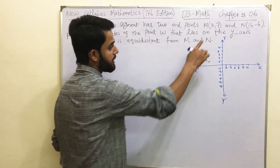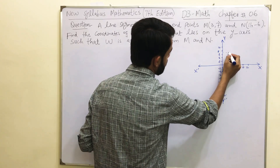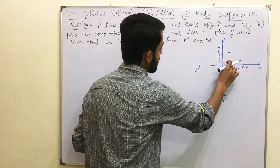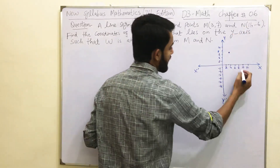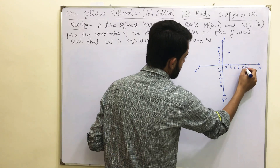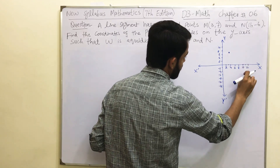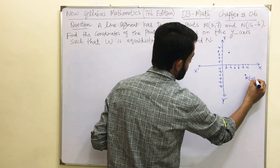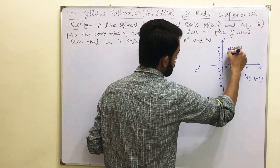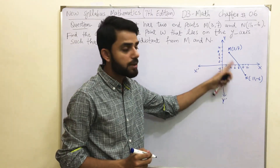The coordinates of point M are (3, 7) — go 3 units along the x-axis and 7 units up, and join to get point M. For point N, the coordinates are (11, -6) — 11 is between 10 and 12, and minus 6 on the y-axis. Join these two plotted points; this is your line segment. It is a line segment because both endpoints are fixed.